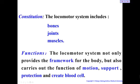From the three parts of the locomotor system, let's see their functions. The locomotor system not only provides the framework — all the bones connected to each other form a framework that allows us to stand up, sit down, or lie down — but also carries out the function of motion. All movement is finished by the locomotor system. It also supports our body, supports our height and limbs, and provides protection. For example, the thorax bones protect the heart, lungs, and other organs. Some bones can also create blood cells.